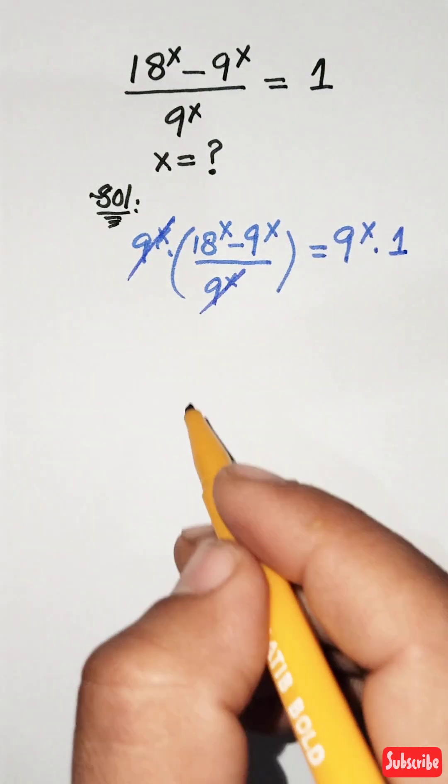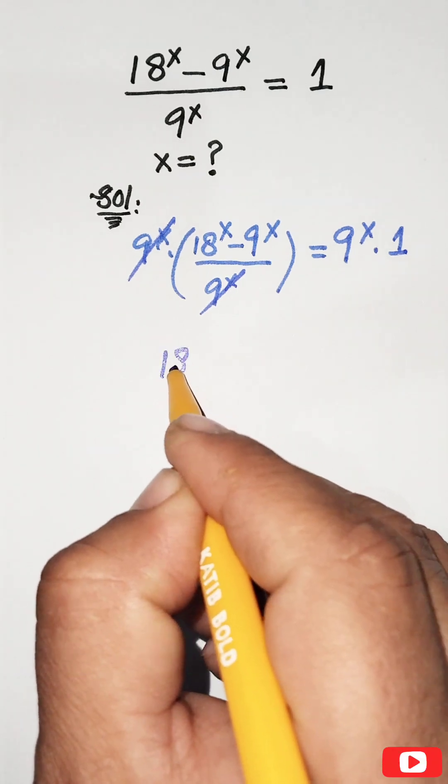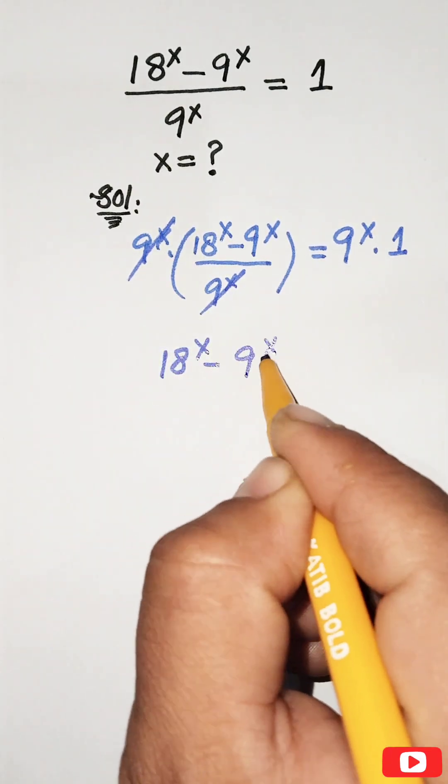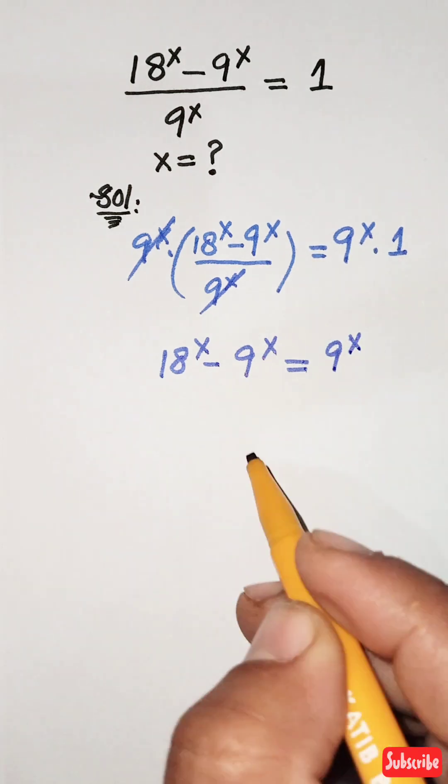Canceling 9^x with 9^x, we get 18^x minus 9^x equals 9^x times 1, which is 9^x.